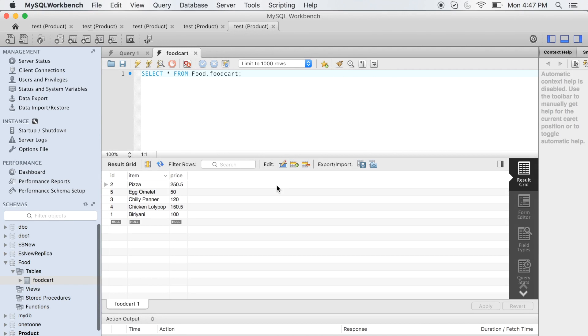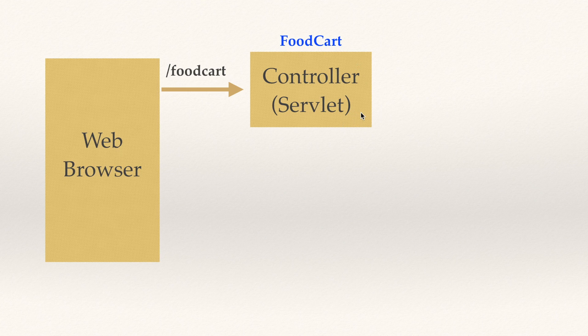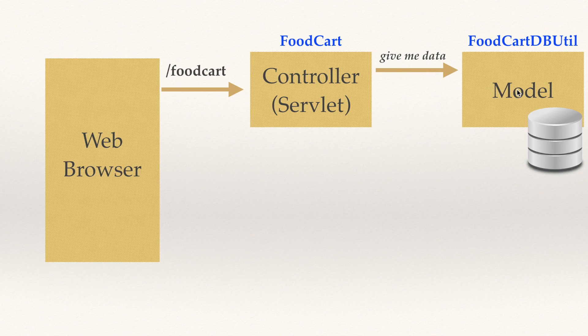Now let's walk through the project architecture. We have a web browser — say Chrome — and whenever we type our URL and press enter, a request comes in. First the request comes to the controller, and the controller is basically a servlet. In my application FoodCat, I'm going to name my controller servlet 'FoodCat'. This controller is then going to talk to the database via the model, and the model is going to give back the data to the controller.